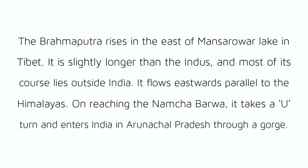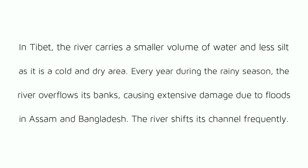The Brahmaputra River System: The Brahmaputra rises in the east of Mansarowar lake in Tibet. It is slightly longer than the Indus, and most of its course lies outside India. It flows eastwards parallel to the Himalayas. On reaching the Namcha Barwa, it takes a U-turn and enters India in Arunachal Pradesh through a gorge. In Tibet, the river carries a smaller volume of water and less silt as it is a cold and dry area. Every year during the rainy season, the river overflows its banks, causing extensive damage due to floods in Assam and Bangladesh. The river shifts its channel frequently.